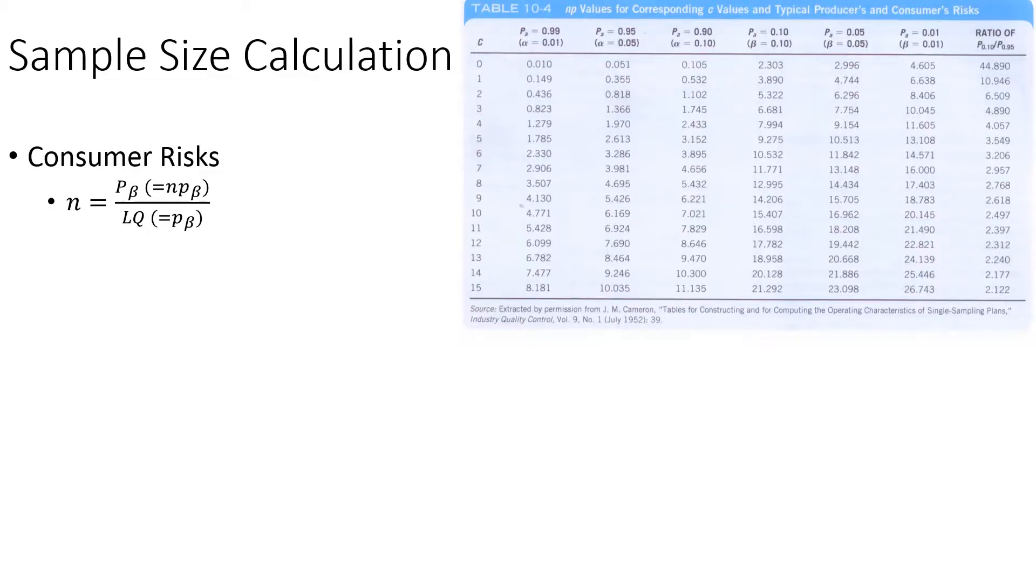Sample size calculation based on typical consumer risk. Consumer risk beta is 0.1 or 10 percent. LQ is the limiting quality, or the maximum amount the customer or consumer is willing to accept—the maximum number of defectives. Imagine that number is 6 percent. Based on that, we can calculate the sample size.